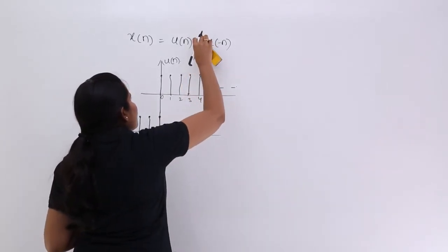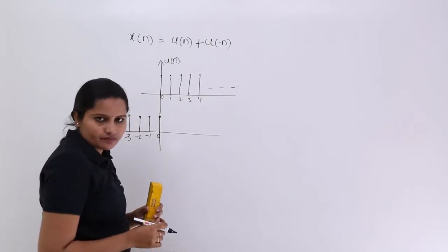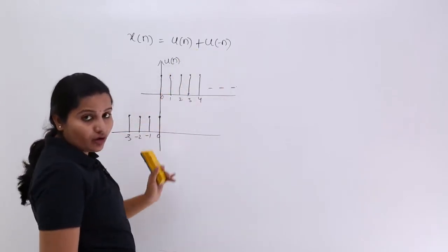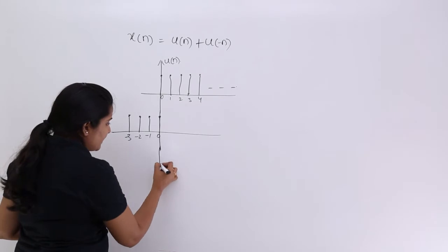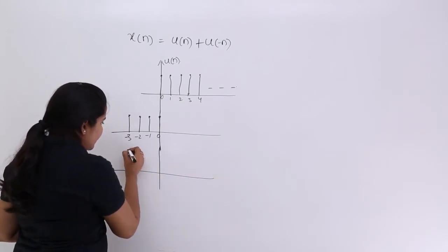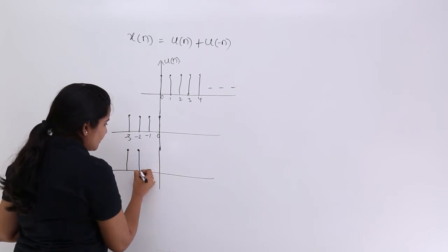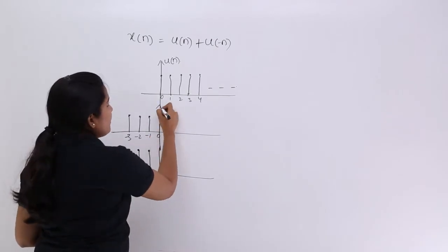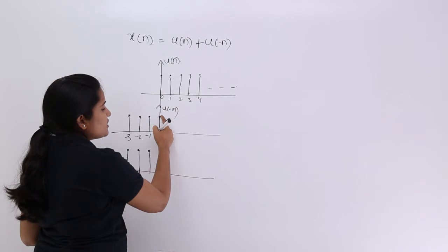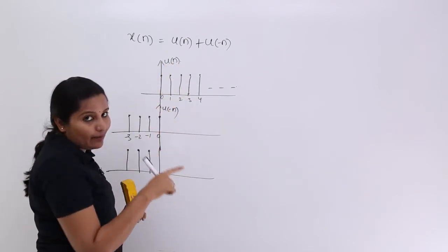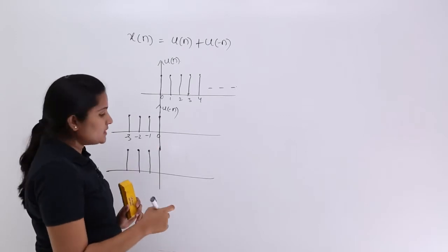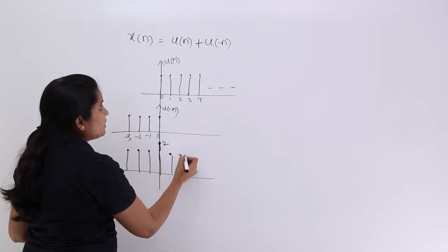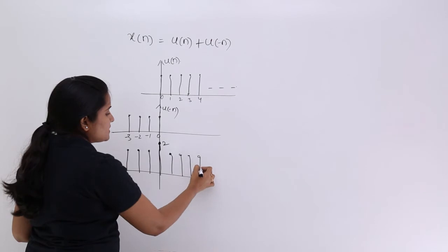Now if you are adding — if you want to make your unit step function periodic by adding u(n) plus u(-n) — then what will happen? From minus infinity to 0, at minus 3 you get 1, at minus 2 you get 1, at minus 1 you get 1. But at 0, you can notice 2 samples. In u(-n) you have a sample at 0, and in u(n) you also have a sample at 0. Those 2 samples are added and you get an amplitude of 2 at n=0, while the remaining u(n) samples continue as normal.